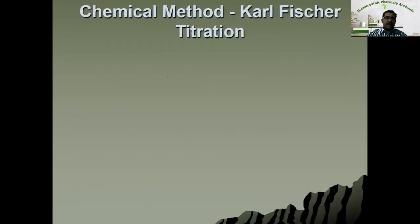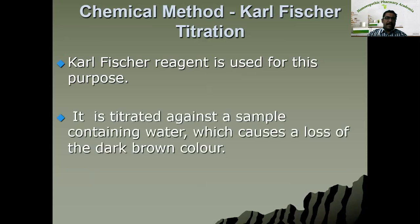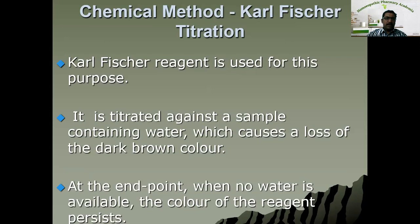The next method is Karl Fischer titration. Karl Fischer reagent is used for this purpose — it is a sensitive reagent that can detect the presence of moisture or water in a solution. It is titrated against the sample containing water, which causes a loss of the dark brown color. If water is present, the dark brown color of the reagent disappears. At the end point, when no water is available, the color of the reagent persists. This is also known as colorimetric titration because color is used to estimate the moisture present in the solvent.